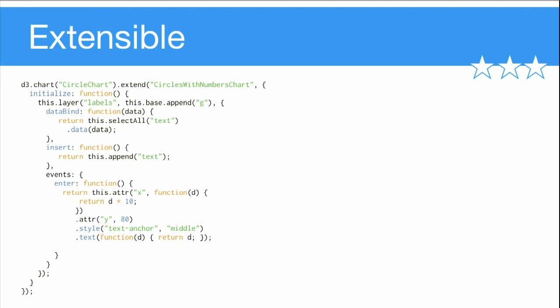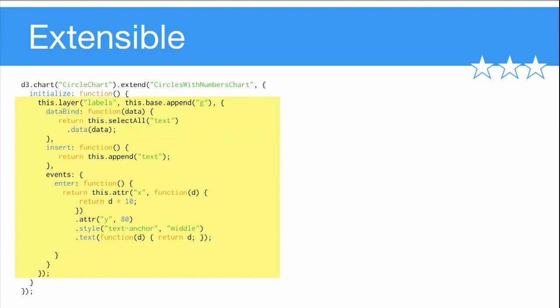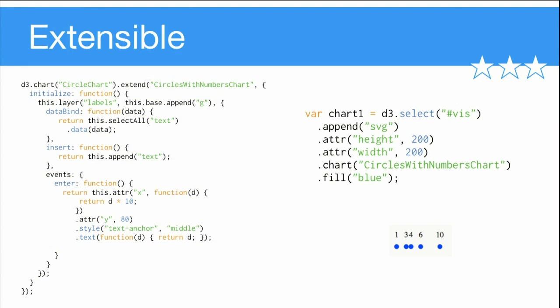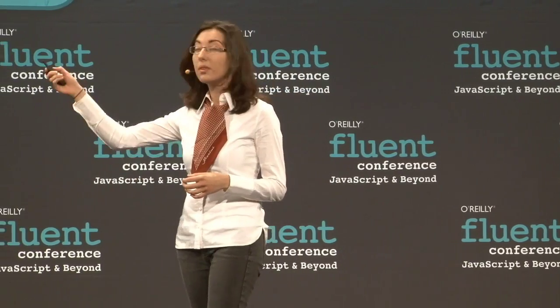Our third step is extensibility. We've created a circle chart, but decided it's a little bit boring, and what we'd really like to do is add some labels to it. So what we're going to do is extend our chart. It looks very similar, except I have this extend method that I can call right off of the D3 chart function. Here I'm going to create a brand new chart called circles with number chart. Inside, I'm going to add a new layer that's going to contain labels inside of a new group, and position them exactly the same way. What that gives me, as you can see, is blue circles with a bunch of numbers on top. In terms of instantiating it, it really didn't take any more work, and note that I still had all the API from the previous chart — the circles come from the fact that we were extending the previous chart, so we get all the functionality already defined along with the new functionality we're adding.